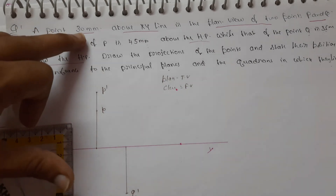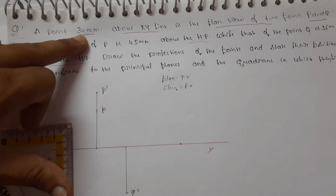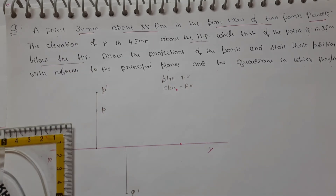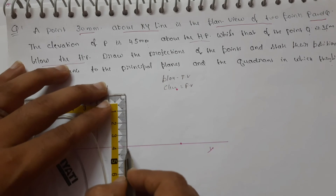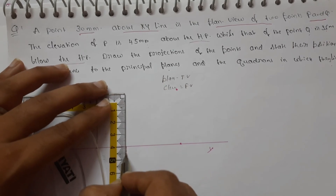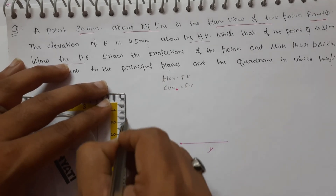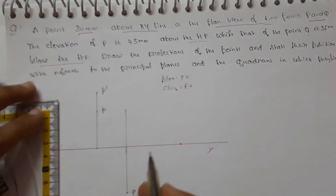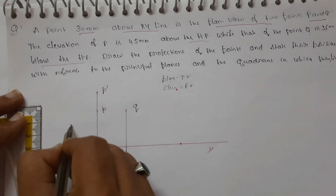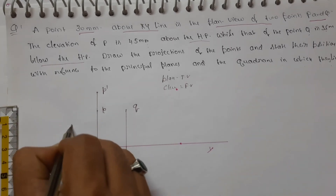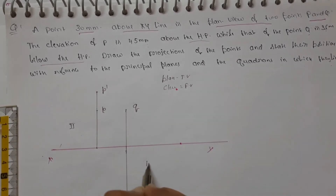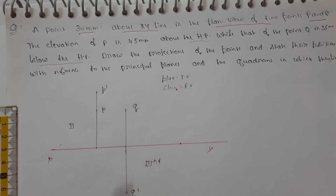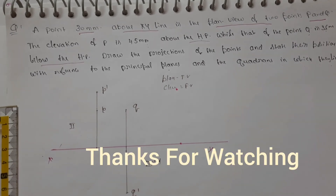What is the point that we have on the XY line? So this is 30mm. Just to clarify the two points — this is the second quadrant, and this is the third quadrant.